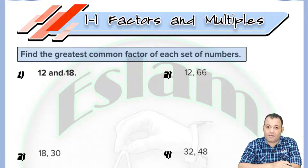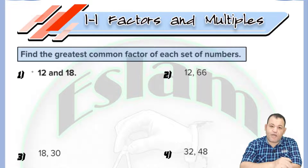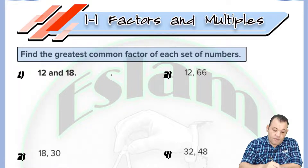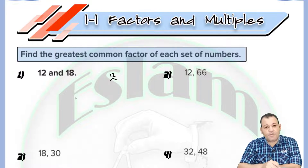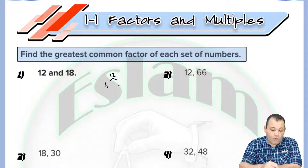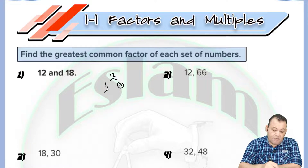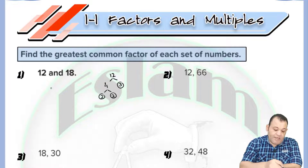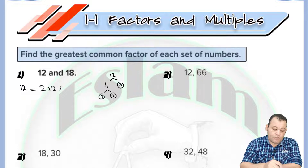How can we find it? Number one, we need to factorize 12 and 18. I will start with 12. I need two numbers — if you multiply them, the answer will be 12. So we have 4 and 3. Since 3 is a prime number and 4 equals 2 times 2, we can say 12 equals 2 times 2 times 3.